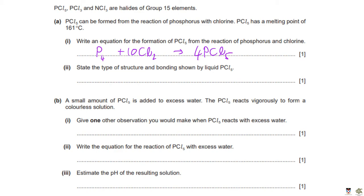State the type of structure and bonding shown by liquid PCl₅. PCl₅ is a solid at room temperature as seen from its high melting point of 161°C, but in the liquid state above that temperature: since it is between two non-metals, the bonding is covalent, and the structure is simple molecular (or simple covalent). Both terms are needed.